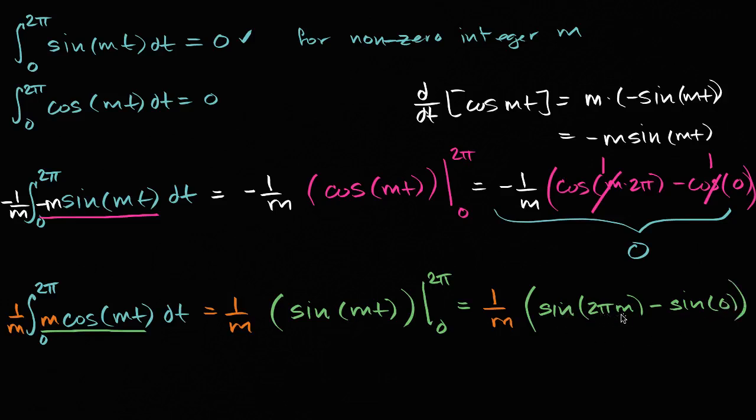And what's the sine of any multiple of two pi? Remember m is a non-zero integer. So any multiple, it's going to be a multiple of two pi here. Well that's just going to be zero. And sine of zero is just going to be zero. So this whole thing is just going to be zero.